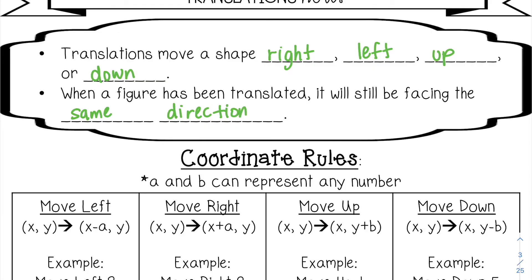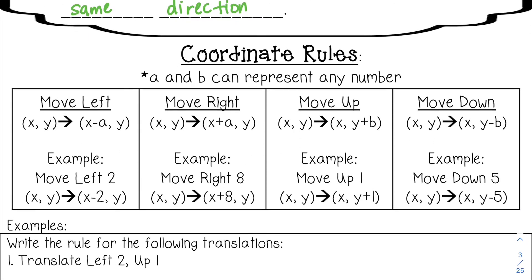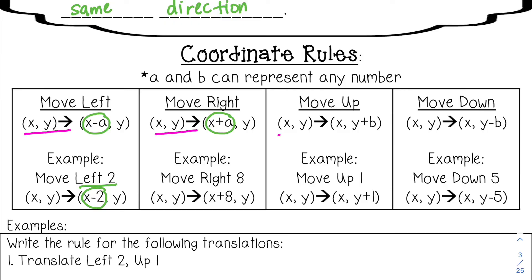Let's go over the coordinate rules for translations. When you move a shape to the left, you're going to be subtracting from the x coordinate. For example, if I want to go left two units, I would subtract two from the x value. If I want to go to the right, I would add to the x value. When you write a coordinate rule, you always start with (x, y) with an arrow — that means this is the pre-image I'm starting with. The arrow tells you that you are going to be transforming it, and the right side tells you how to transform it.